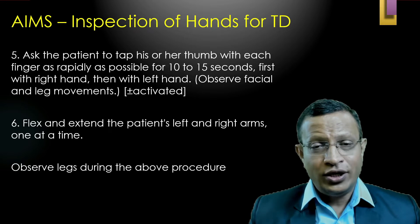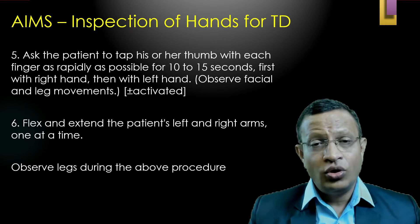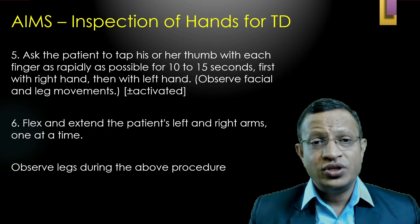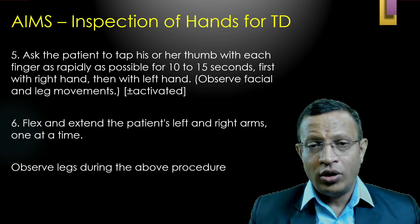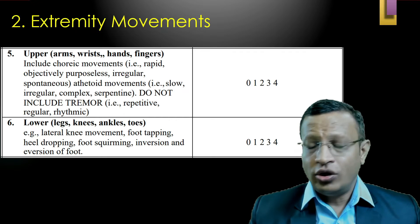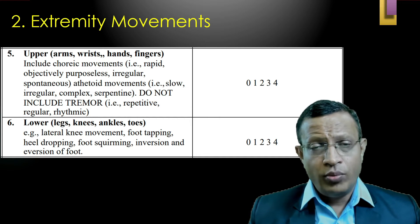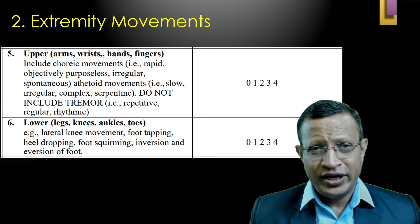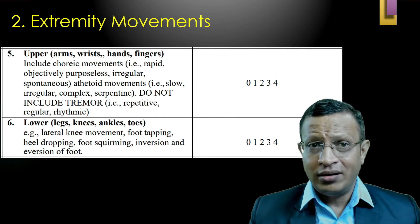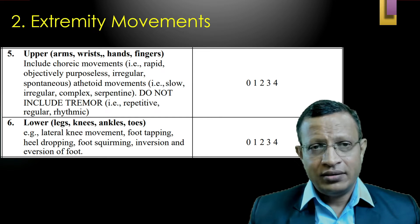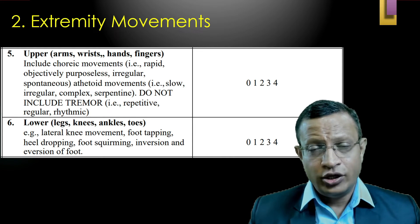Step six: flex and extend the patient's arms — both left and right — to look for any rigidity, and at the wrist, look for any cogwheel rigidity. At the same time, observe the legs for any abnormal involuntary movements in the toes. Code both upper and lower limb findings. For upper limbs, code for choreo movements — rapid, objectively purposeless, irregular, spontaneous movements — and athetoid movements — slow, irregular, complex, serpentine-like movements. Do not code for tremor. For the lower leg, look for lateral knee movements, foot tapping, toe movements, and inversion or aversion of the toes or legs.